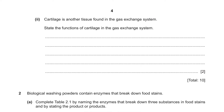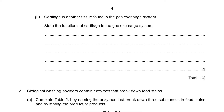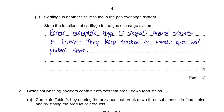Cartilage is another tissue found in the gas exchange system. State the functions of cartilage in the gas exchange system. Cartilage can often be found in the trachea or bronchi — they are C-shaped rings and they keep the trachea or bronchi open and protect them. They also reduce resistance to movement of air and help reduce sound in the larynx.